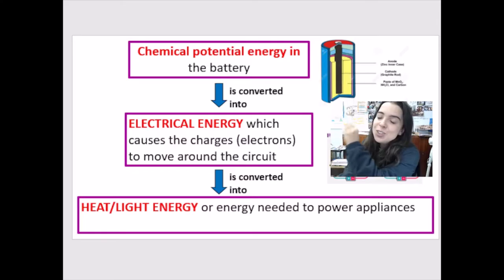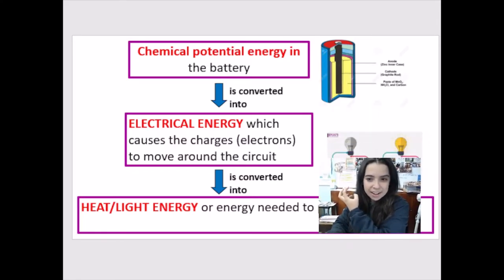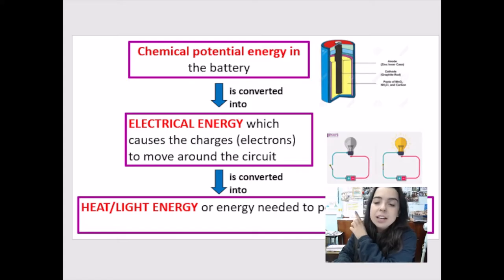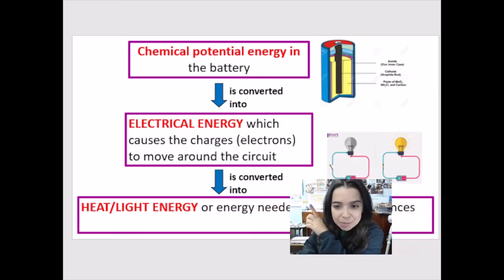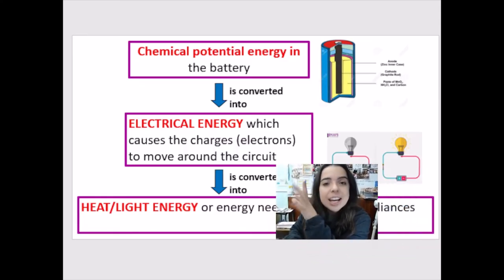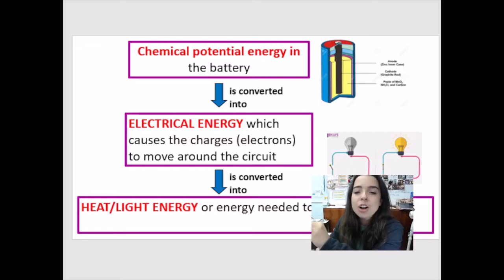It has chemical potential energy. When we connect that into a circuit with conducting wires, that chemical potential energy is converted into, is transformed into electrical energy. And the electrical energy gives the electrons, the charges, the energy to move around the circuit. Energy is measured in joules.